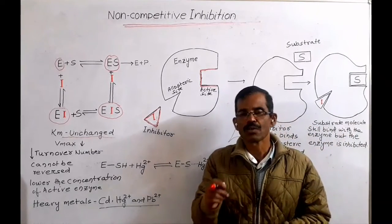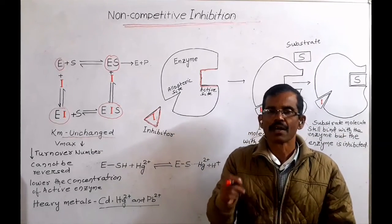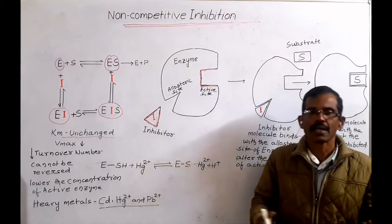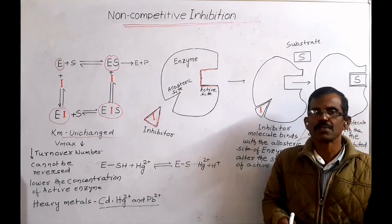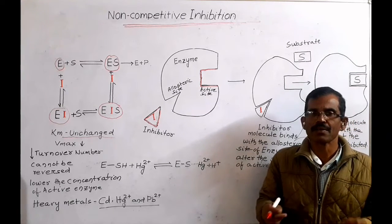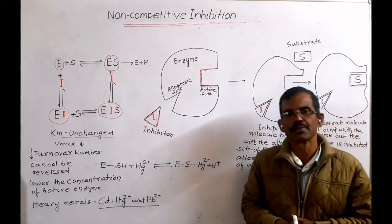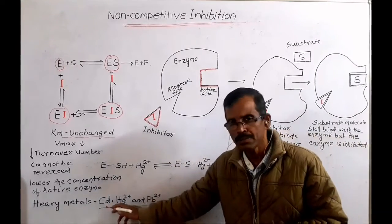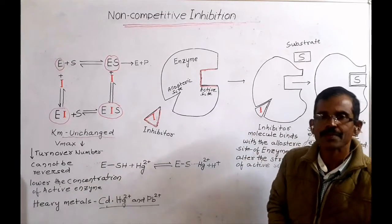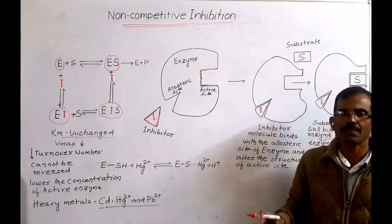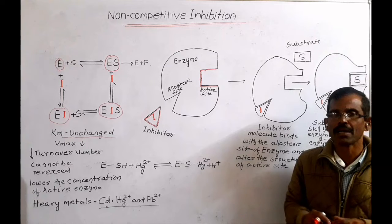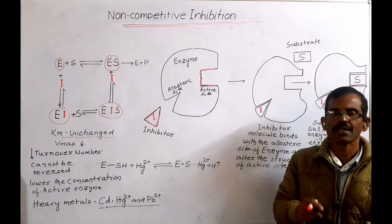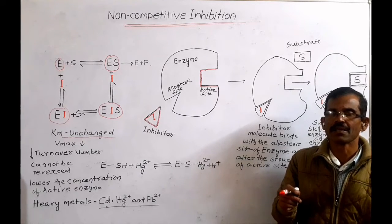Cytochrome C oxidase is the last enzyme of the electron transport chain. Another example is the inhibition of a variety of enzymes by heavy metal ions. Metal ions like cadmium, mercury and lead inhibit a variety of enzymes by forming mercaptides with the sulfhydryl group of the cysteine residue present in the enzyme.